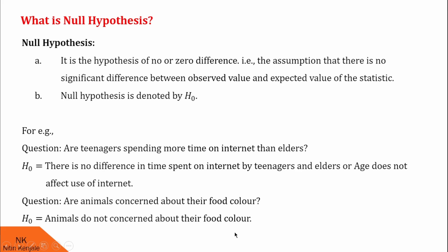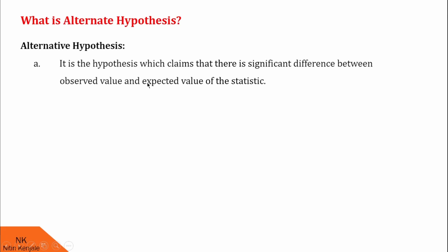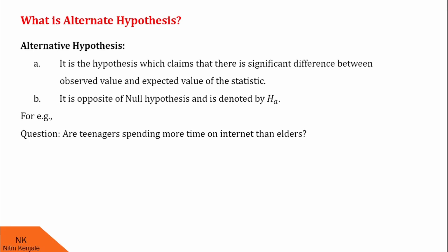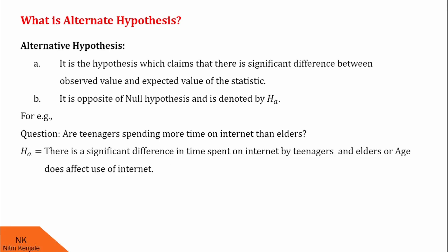I hope you understood what is meant by null hypothesis and how to decide it. Now let us proceed for alternative hypothesis. It is the hypothesis which claims that there is a significant difference between the observed value and expected value of the statistic. It is usually denoted by HA and it is opposite of null hypothesis. Our previous question was: are teenagers spending more time on internet than elders? Earlier we decided our H0 as: there is no difference in time spent by teenagers and elders on internet. Now we should write alternate hypothesis HA as: there is a significant difference in time spent on internet by teenagers and elders, or age does affect the use of internet.